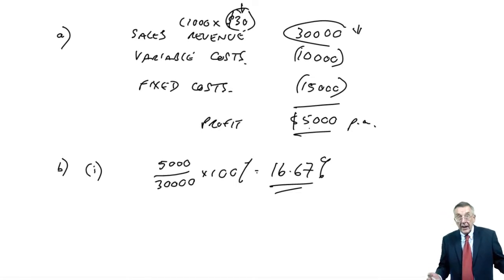So any smaller drop, and we are still profitable. Any larger drop, and we're loss-making. And strictly, we should put a sign against it. It's minus 16.67%, because I'm only worried if the sales price falls. Obviously, if the sales price ends up being higher, then we make even more profit. There's no problem.